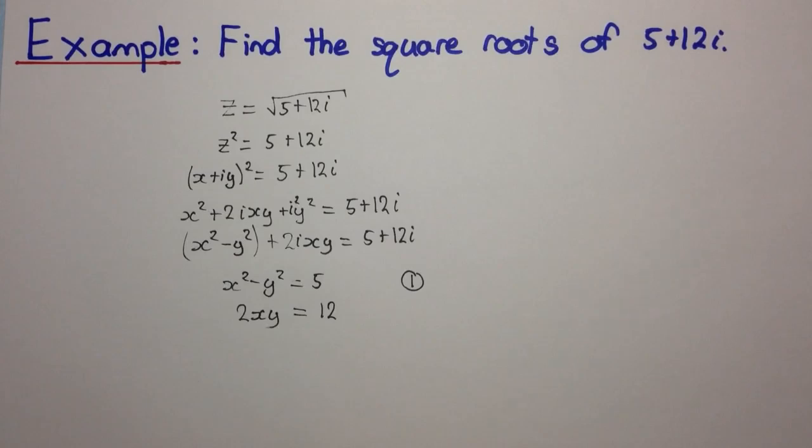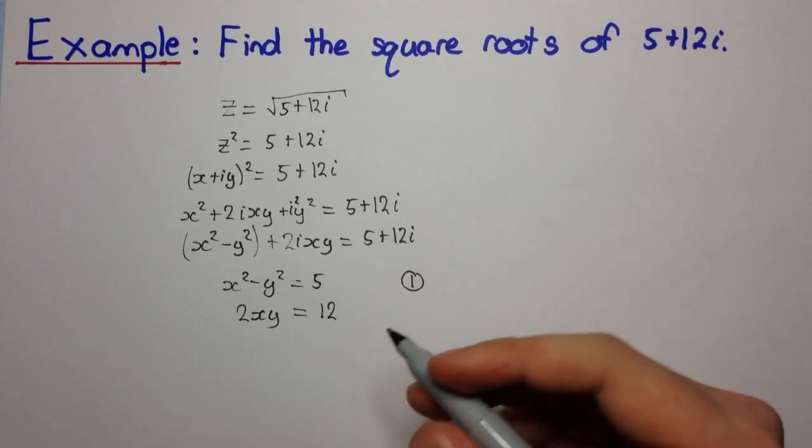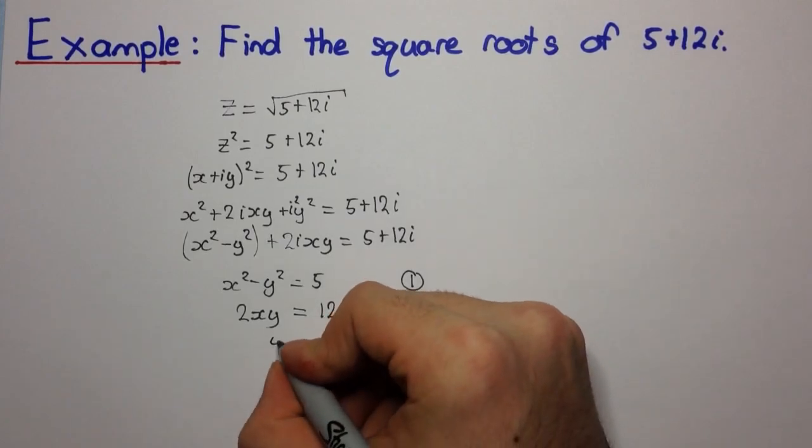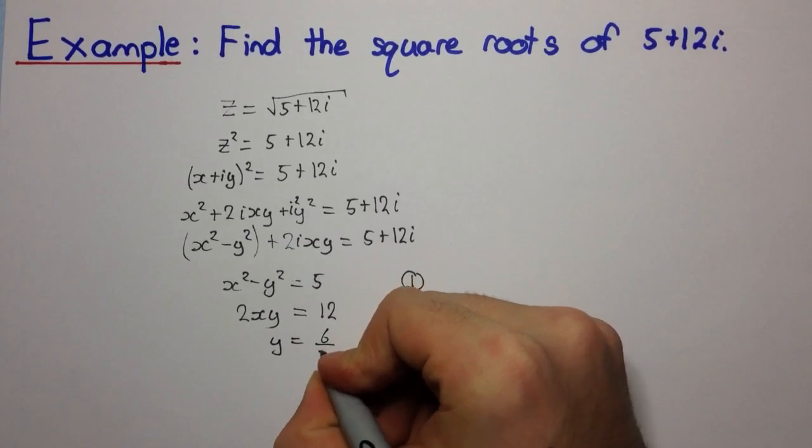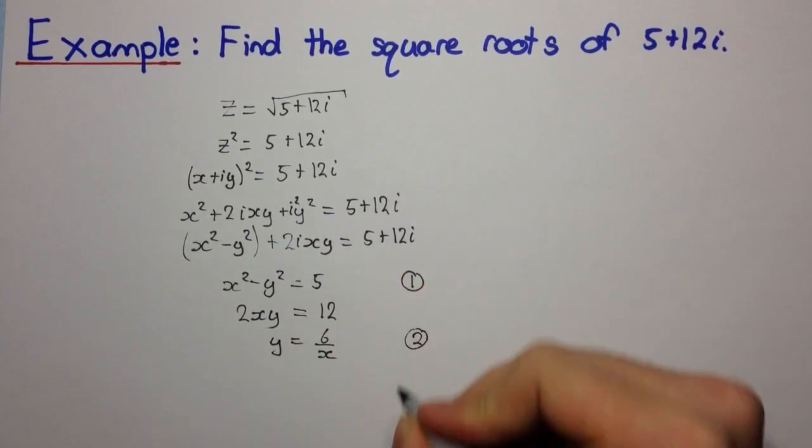And here we can divide by 2 and get xy equals 6, and then we can divide again by x, and we get y equals 6 over x. And let's call that equation 2.